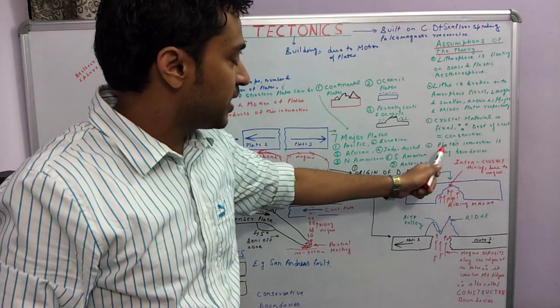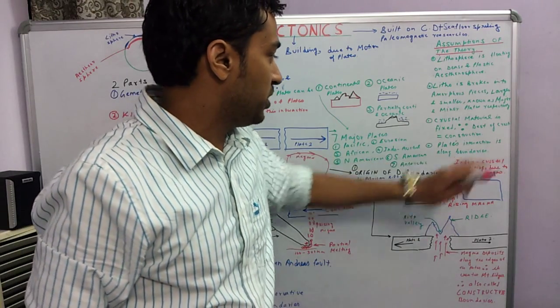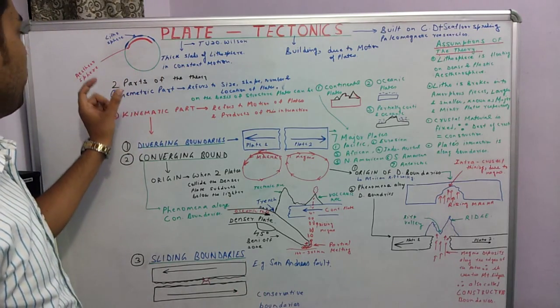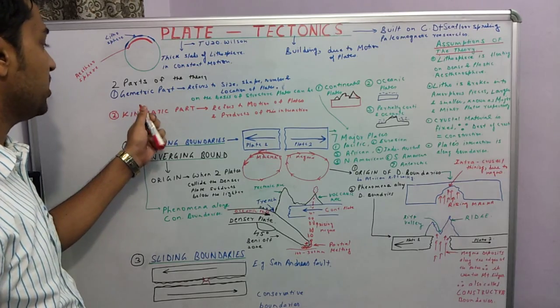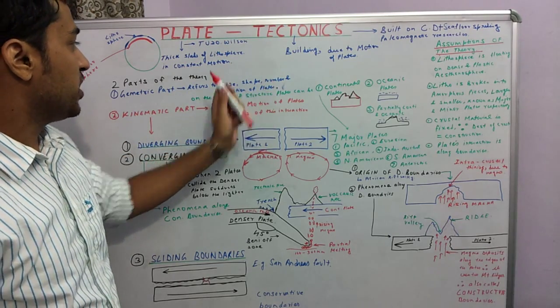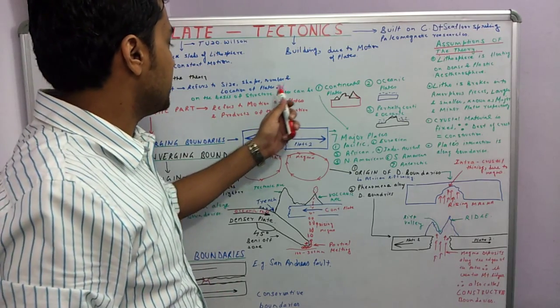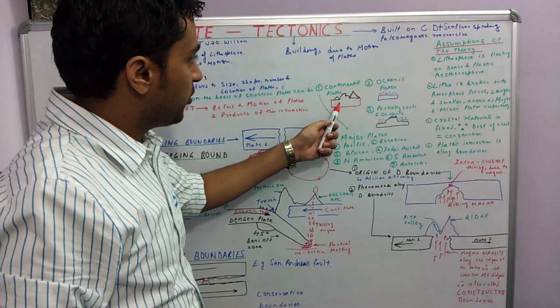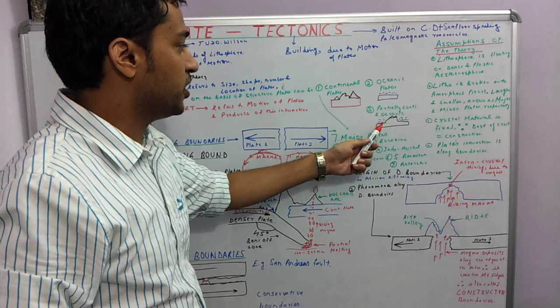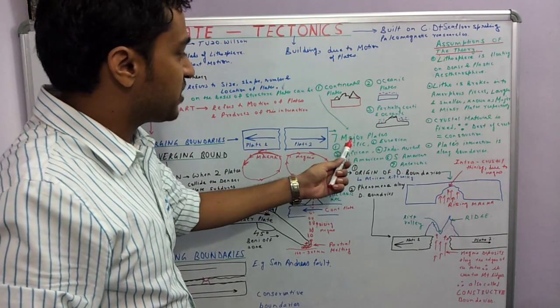Its other assumption is that the interaction of the plates occurs along the boundaries. Now we can see the theory of plate tectonics in two parts. One is the geometric part. This part refers to the size, shape, location, and the number of plates. On this basis we can see that the structure of plates can be continental plates, oceanic plates, and partially continental and partially oceanic plates.